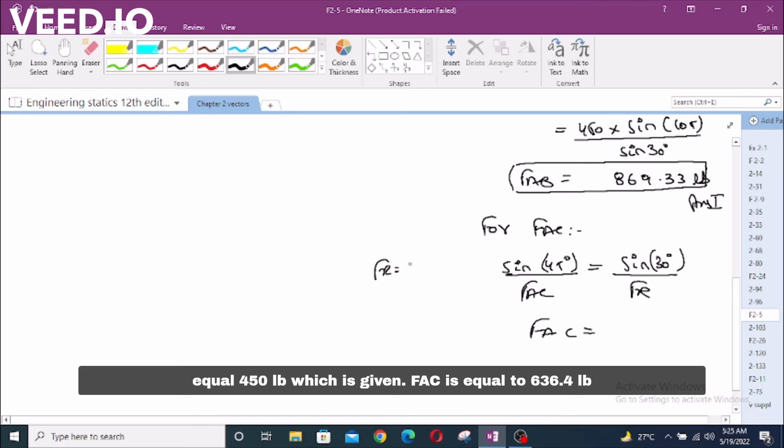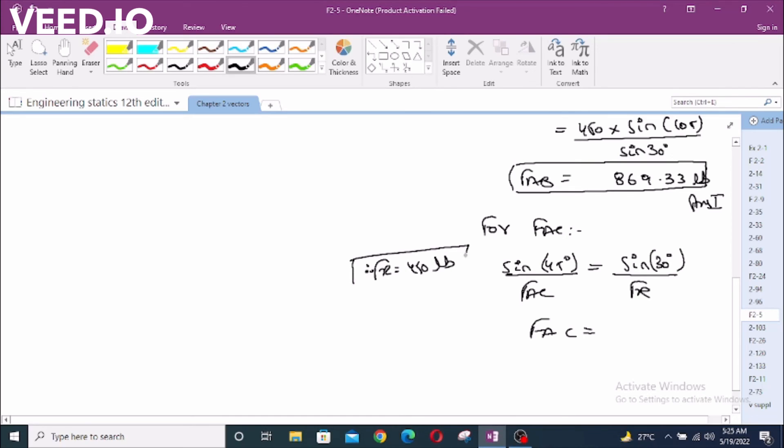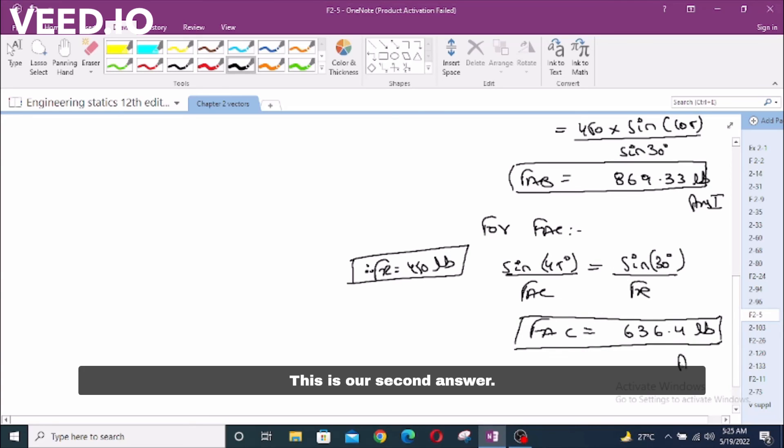F_AC equals 636.4 lbs. This is our second answer.